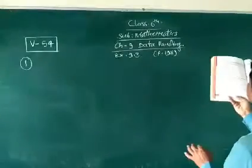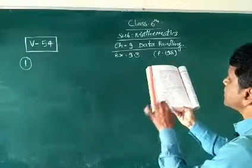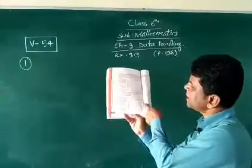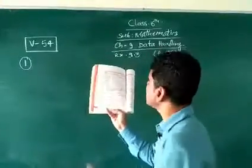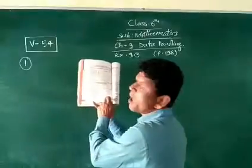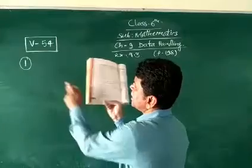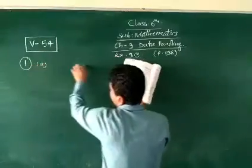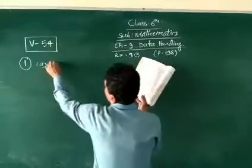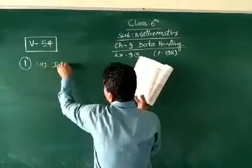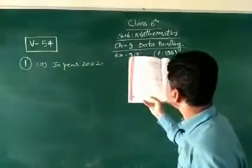This is the first question. Question number 1: The wheat production maximum. Looking in the book, the first question is in year 2000 and then in year 2002, the wheat production was maximum.